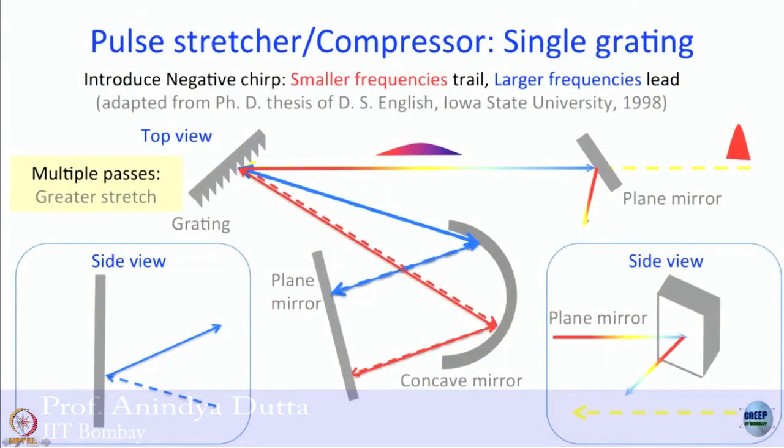So, this is where we have stopped our discussion - how do you stretch a pulse. So far we have discussed the simplest possible geometry using a single grating, couple of plane mirrors and a concave mirror. We had said that if you want a greater stretch, a greater chirp, then the path difference would better be something like 6 centimeters.